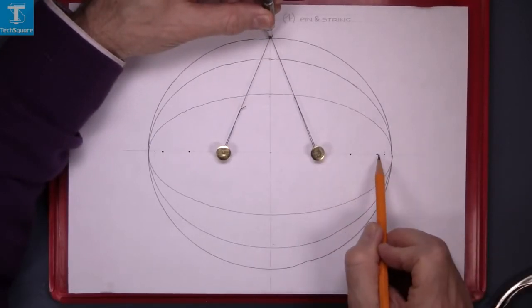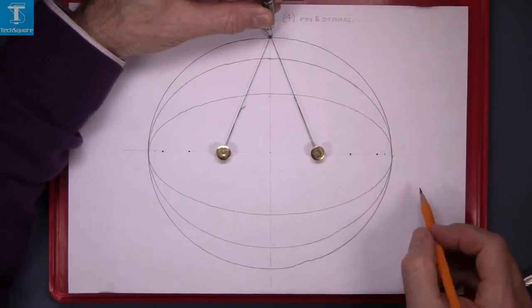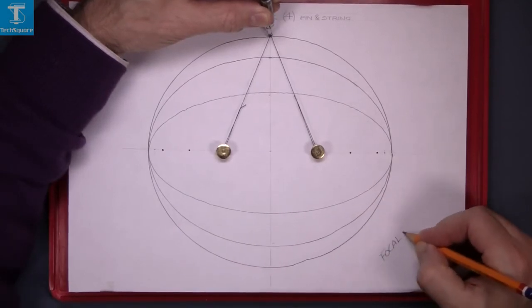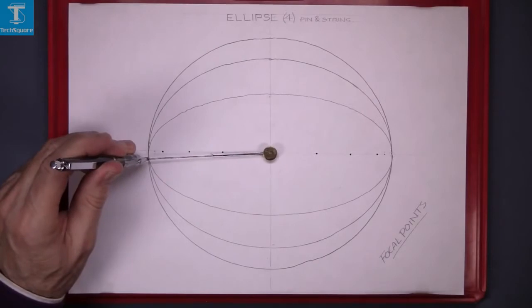These points here are called the focal points of the ellipse. There are two focal points on each ellipse.